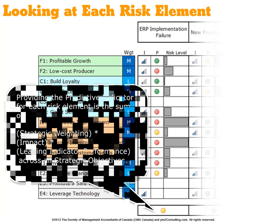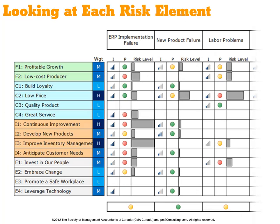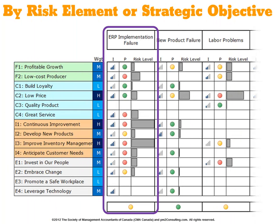When you look at the risk scorecard, we can view risks as they're occurring by risk element. In this example, there's a yellow indicator, meaning caution or pay attention around implementation. But the new product implementation looks green, so we don't need to focus our risk energies and mitigation techniques there at this point in time. Looking at the scorecard vertically begins to show what risk might be manifesting itself against each risk element.